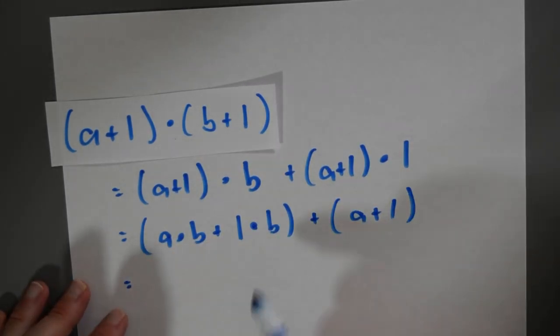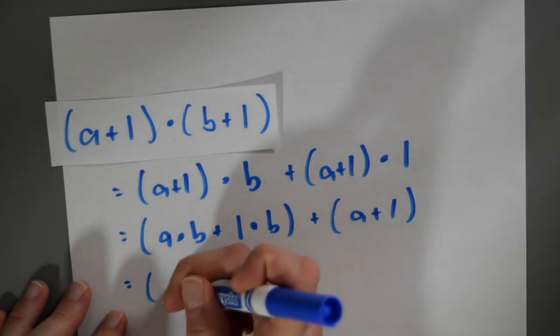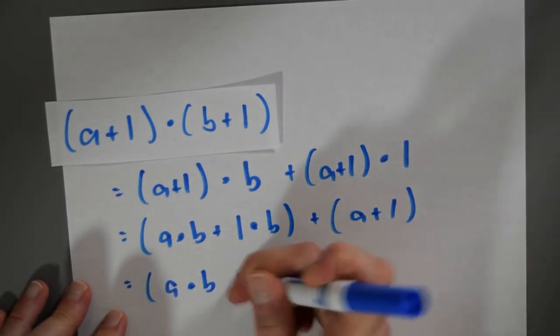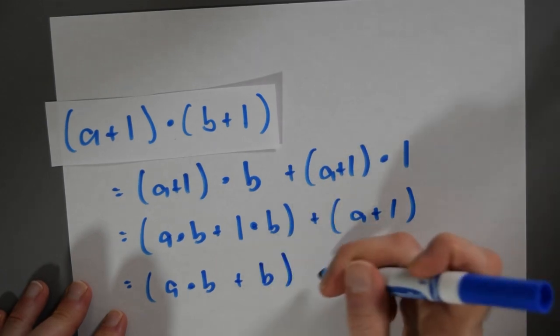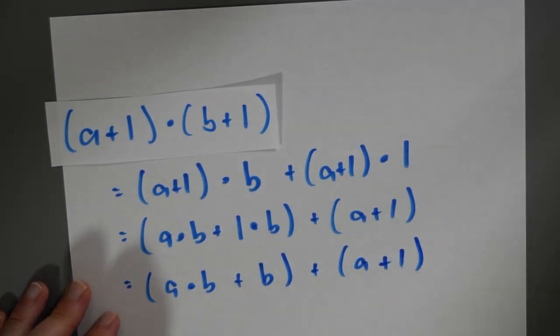Now I've got another multiplicative identity here. So I could write this as a·b + b + a + 1.